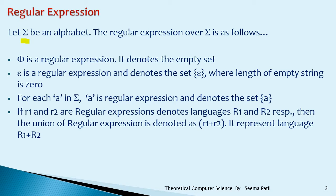Sigma means it can be small a, b, and so on, or 0, 1, 2 like this. Phi is a regular expression, and phi means it is an empty set — nothing is there. Epsilon is a regular expression, denoted as the set {epsilon}. Its length is 0 and it is referred to as an empty string. For each small a in sigma — where sigma means input symbols like a, b, 0, 1, 2 — small a is a regular expression, denoted by the set {a}.